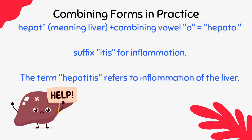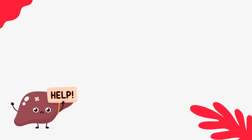Let's put our knowledge into practice. Take the root word hepat, meaning liver, and add the combining vowel O to form hepato. Now let's add a suffix, itis, for inflammation. The term hepatitis refers to inflammation of the liver.